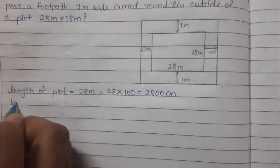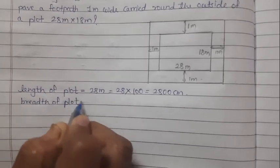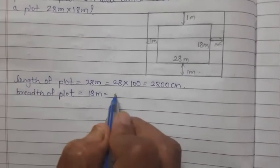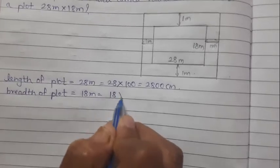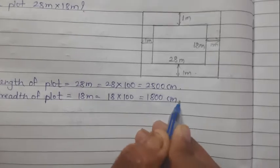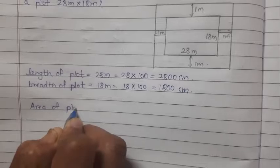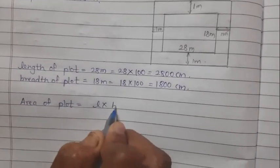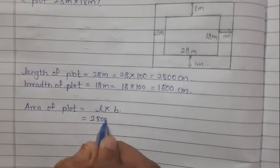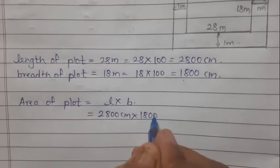Breadth of the plot is 18 meter. Convert into centimeter: 18 into 100 equals 1800 cm. So area of plot equals length multiplied by breadth, which is 2800 cm multiplied by 1800 cm.